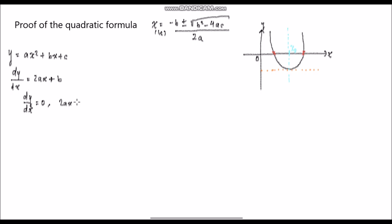So 2ax + b = 0. Let us solve for x — make x the subject. 2ax = −b, therefore x = −b / 2a. We have come to this stage. This is the formula for x-peak, and we've found it.